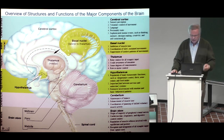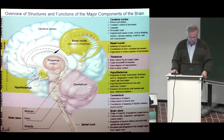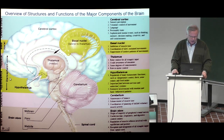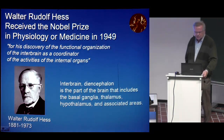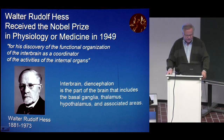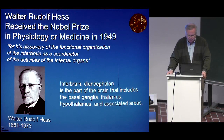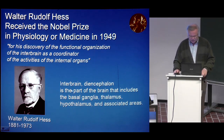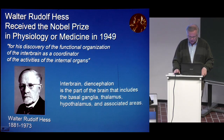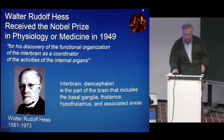So personality mainly resides in the cerebral cortex. This region — hypothalamus and thalamus — is called the encephalon. Walter Rudolph Hess received a Nobel Prize in Physiology and Medicine for his discovery of the functional organization of the interbrain as a coordinator of the activities of internal organs. The interbrain is the encephalon, the part of the brain that includes the basal ganglia, thalamus, hypothalamus, and associated areas. So again, one Nobelist in bioelectromagnetism.